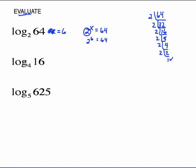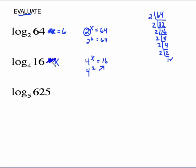Same idea here: log base 4 of 16 equals x. Write it in exponential form — 4 to the x equals 16. You should know this value without needing a calculator. 4 squared gives us 16, so x equals 2. In other words, log base 4 of 16 equals 2.